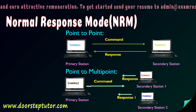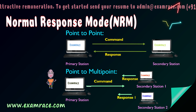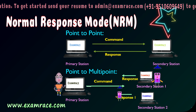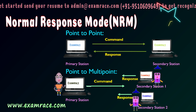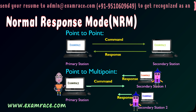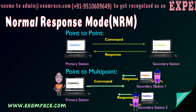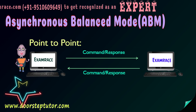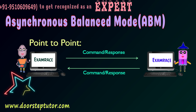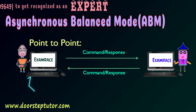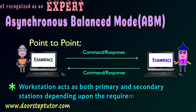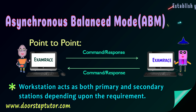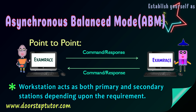The second category under NRM is point-to-multipoint, where there can be multiple secondary stations responding to a single primary station. Under Asynchronous Balanced Mode (ABM), the transfer is point-to-point, but the workstation can act as both primary and secondary station depending on the requirement — meaning it can issue either commands or responses.